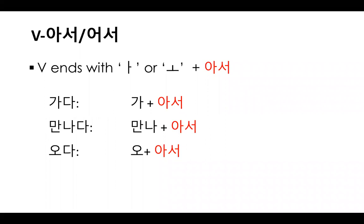When the verb stem ends with a vowel 아 or 오, you attach 아서. So 가다, to go — stem 가, there's a vowel 아, so you attach 아서, making 가서.